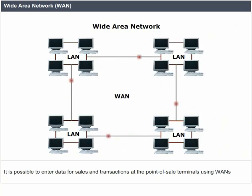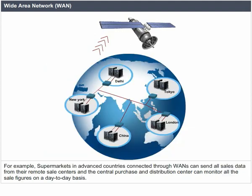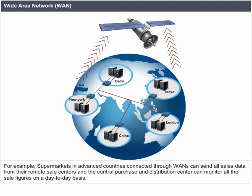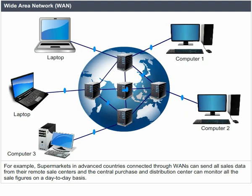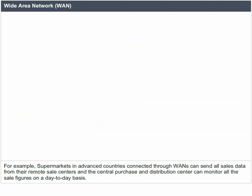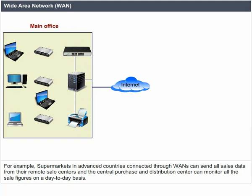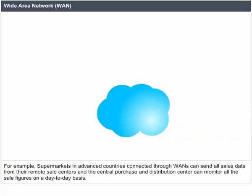Wide Area Networks operate at speeds much higher than the 19,200 BPS limit of normal voice-grade telephone lines. It is possible to enter data for sales and transactions at point-of-sale terminals using WANs, and to centralize this data for processing or reporting. For example, supermarkets in advanced countries connected through WANs can send all sales data from their remote sales centers, and the central purchase and distribution center can monitor all sales figures on a day-to-day basis.